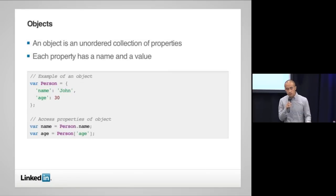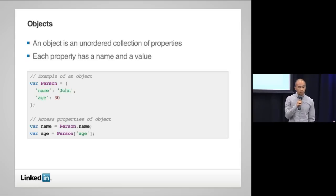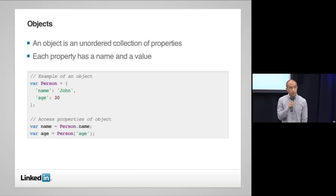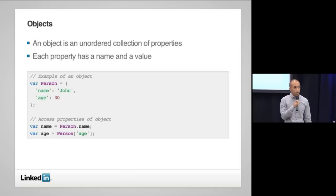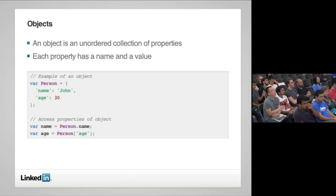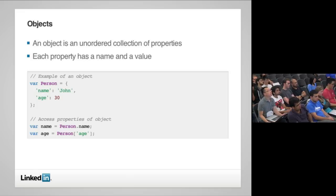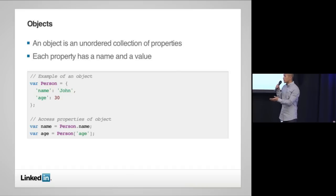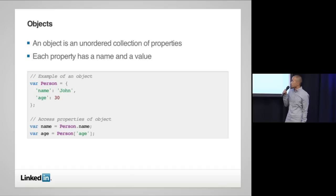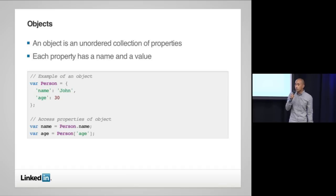Other than primitive types, everything else in JavaScript is an object — an unordered collection of properties where each property has a name and a value. A name can be any string, including an empty string, and a value can be a number, string, or boolean, but it can't be set to undefined. As a code example, we're creating an object 'person' with the property 'name' set to the string 'John' and the property 'age' set to the number 30. You can access properties either through dot notation — person.name — or through bracket notation by passing the key into person.